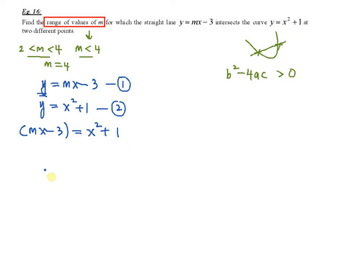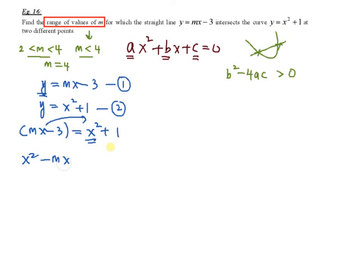You have to arrange the result into the general form of a quadratic equation: ax squared plus bx plus c equals 0, so that you can extract the values of a, b, and c. Bringing terms over, you get x squared minus mx plus 1 plus 3 equals 0, which gives x squared minus mx plus 4 equals 0. So a equals 1, b equals negative m, and c equals 4.